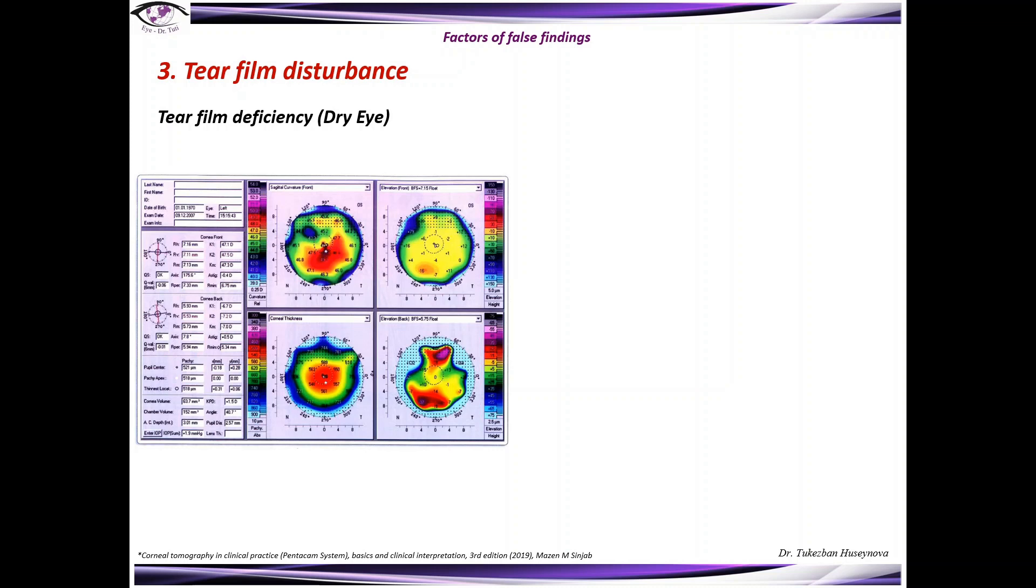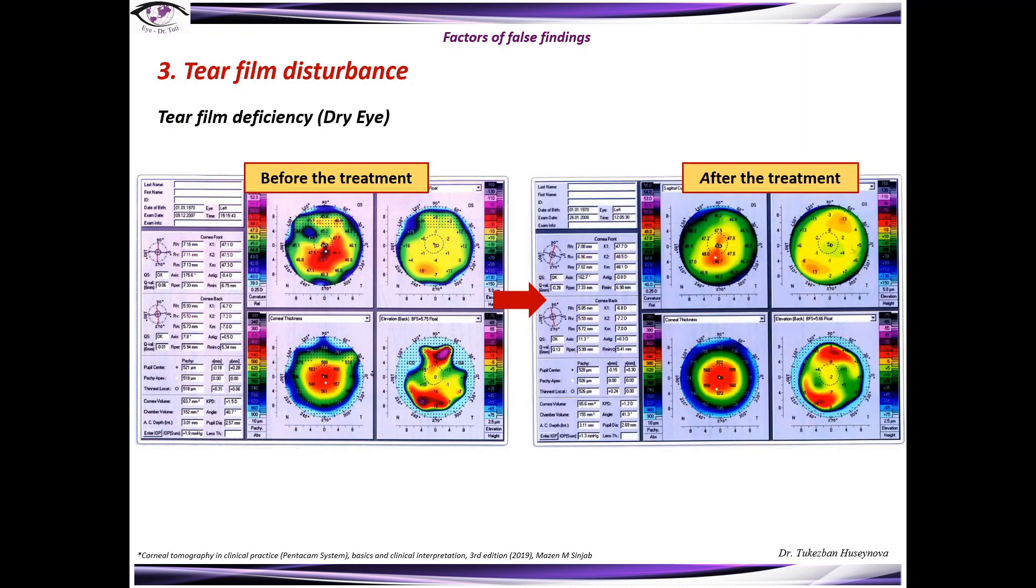Tear film disturbance. Tear film deficiency, as well as tear film excess, can also lead to false findings. Here, for example, you can see a full composite refractive map before the dry eye treatment, and you can see clearly the irregular surface of the cornea. This is before the treatment, and this is the same patient after the treatment, when the surface of the cornea is absolutely smooth and doesn't have any irregularities when you compare to the first image.